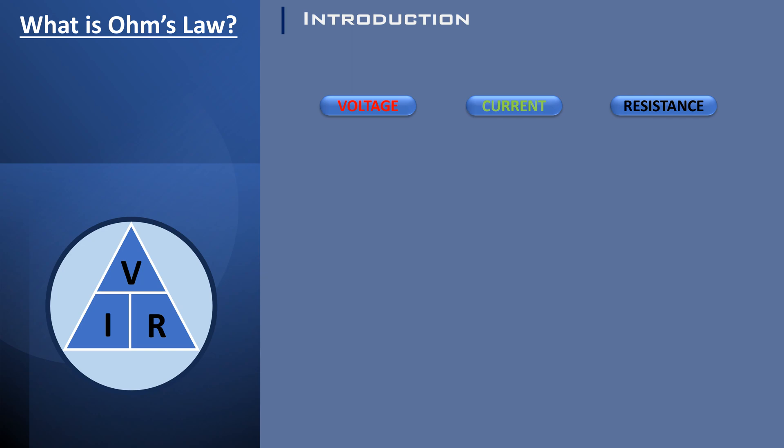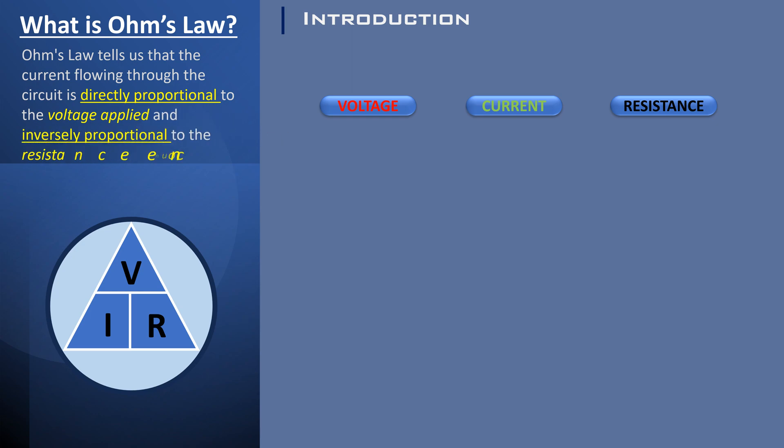Ohm's Law tells us that the current flowing through the circuit is directly proportional to the voltage applied and inversely proportional to the resistance encountered. It can be expressed with the equation V equals I multiplied by R.